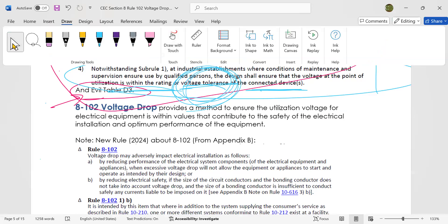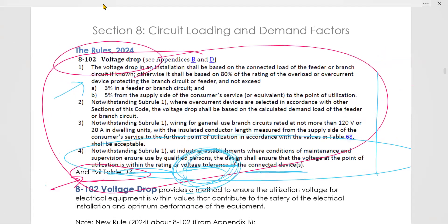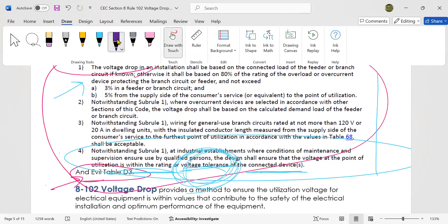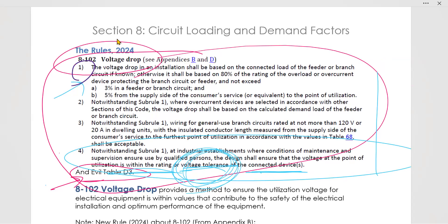All I did in this video is I walked you through subsection 1, 2, 3, and 4. And as a summary, subsection 1 says that you can't drop from supply to service, sorry, from supply of the service to the point of utilization. You can't drop more than 5% and you can't drop more than 3% in any feeder or branch circuit.